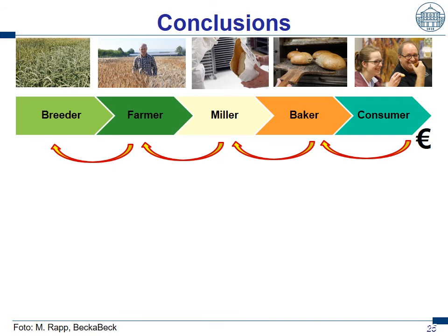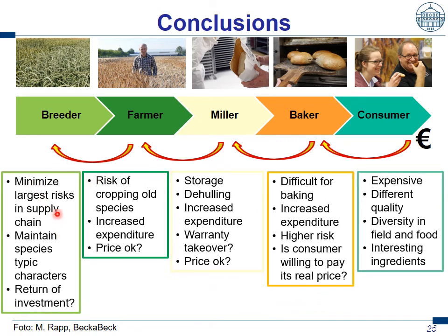Coming to the end. Back to the supply chain — from the breeder over the farmer, miller, baker, finally to the consumer who brings the money into the system to let all actors along the supply chain survive. The breeder's work in ancient grain is to minimize the largest risk in the supply chain. For emmer and einkorn this is especially the high risk of lodging in the field. And this is not done by crossing with wheat and making a second wheat — this is about maintaining the species' typical characters but just trying to reduce the risk, looking into the diversity available in einkorn and emmer.